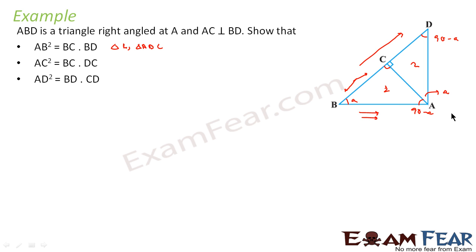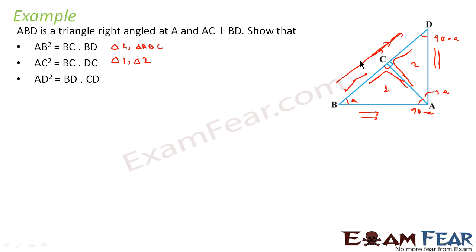Second, AC² equals BC into DC. So AC appears twice, BC is this side, and DC is this side. If you take BC and DC you get triangle 1 and triangle 2. Third, AD² equals BD into CD. So AD appears twice, then we have BD and CD. BD is the big side, and CD is this one. If you take AD and CD you get triangle 2, and if you take AD and BD you get the bigger triangle. So here we are talking about triangle 2 and triangle ABD.